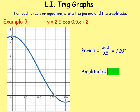You can also see here that you've just got half the graph, or you can look at the number in front of x. So 360 divided by that coefficient of x, that 0.5.